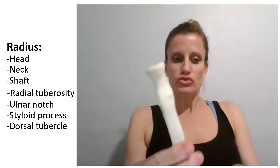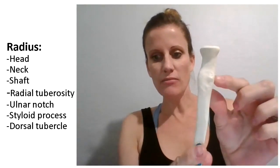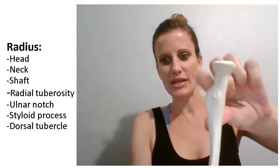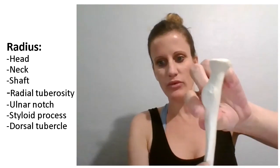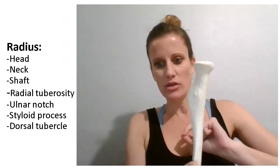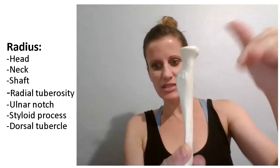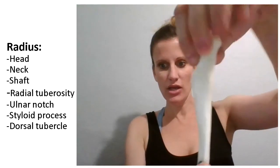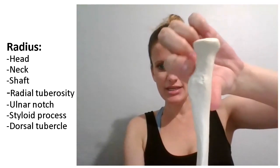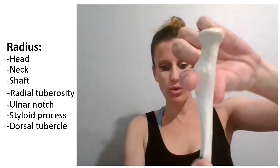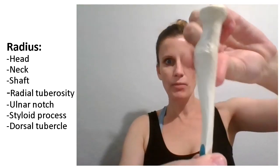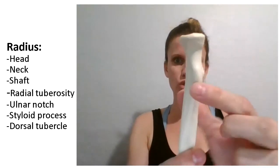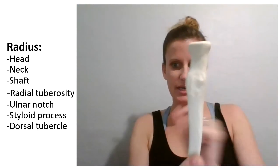The radial tuberosity is this part of the radius that sticks out right here. It's just distal, or just past the neck. You can see how it sticks out right at this portion — that is the radial tuberosity.